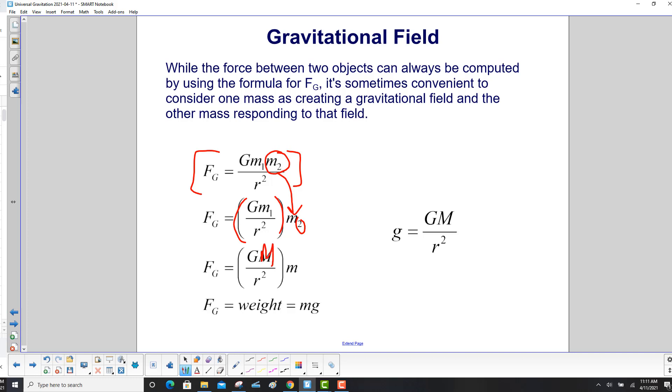And then we get rid of the M2 and we say big M here. This means this big mass generating this gravitational field, then there's this little mass that wanders into it.